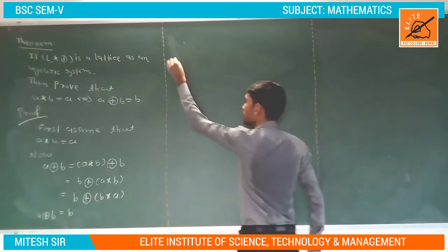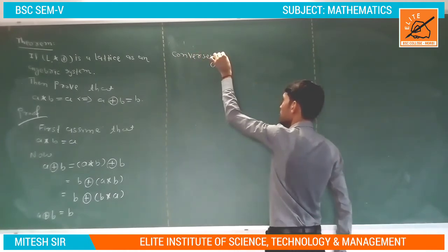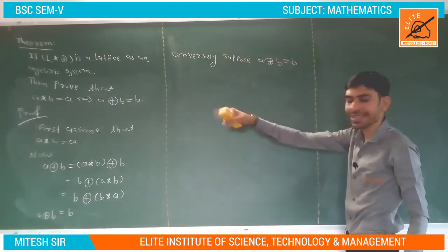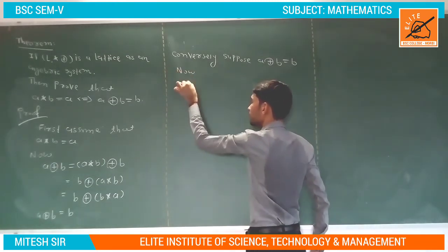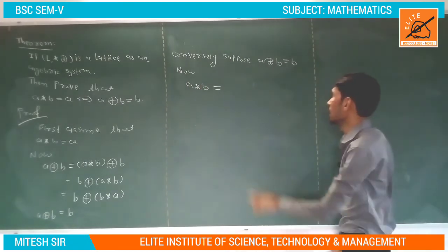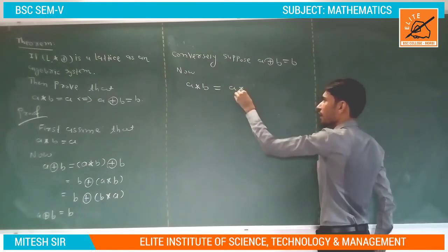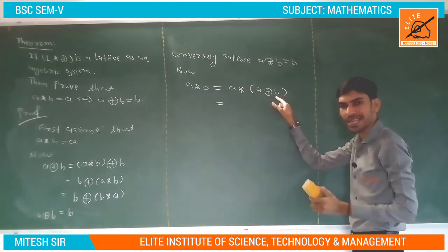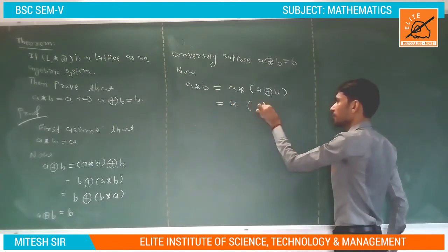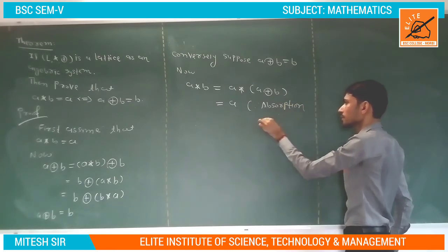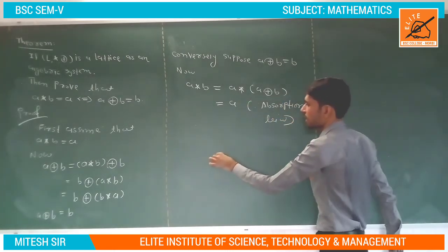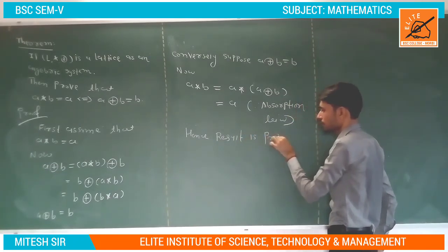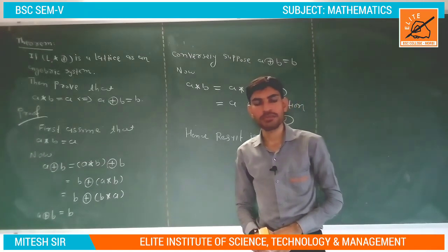Conversely, suppose a⊕b = b; we need to prove a★b = a. We start with a★b. Since b = a⊕b, substitute to get a★(a⊕b). By the absorption law, a★(a⊕b) = a. Therefore a★b = a. Hence the result is proved. In the next lecture we will discuss sublattices.